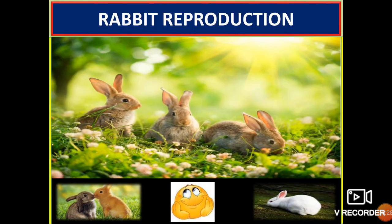Next, let's move to rabbit reproduction. Rabbits have a high reproductive rate compared to other livestock. They become sexually mature within few months of birth and have a relatively shorter gestation. They produce large litters and can be rebred immediately after kindling.